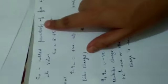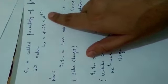Here epsilon naught is called permittivity of free space, and its value is 8.85 times 10 to the power minus 12.